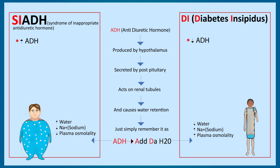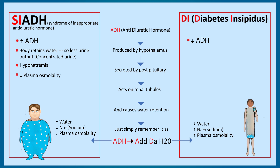In SIADH there is increased ADH, so the body retains water, resulting in less urine output — that is concentrated urine. Due to increased body water there would be dilutional hyponatremia and, as a result, decreased plasma osmolality. This hyponatremia would lead to cerebral edema, headache, and seizures.